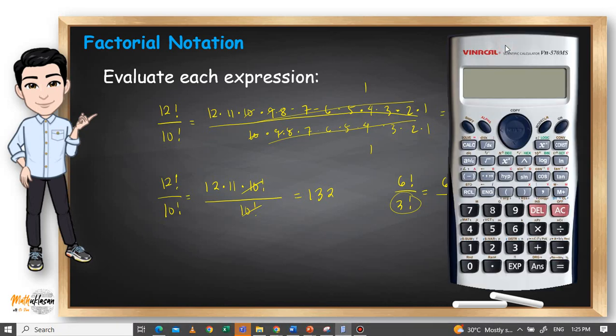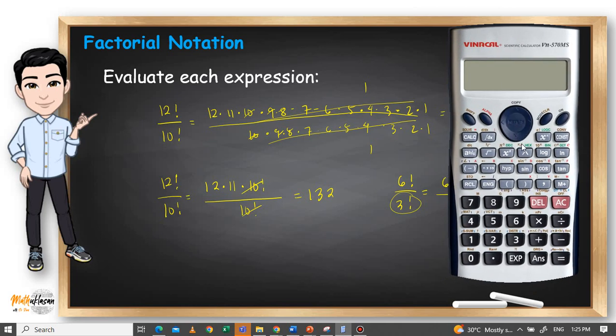Now, I'm going to show it to you using a calculator. I have a calculator here, and all you have to do is look for the x factorial symbol on your calculator. In this calculator I'm using, the x factorial is on the upper part of x raised to negative 1. Some calculators may place it in a different key, but it's mostly on the second floor or second part of the key. You just have to look for it.